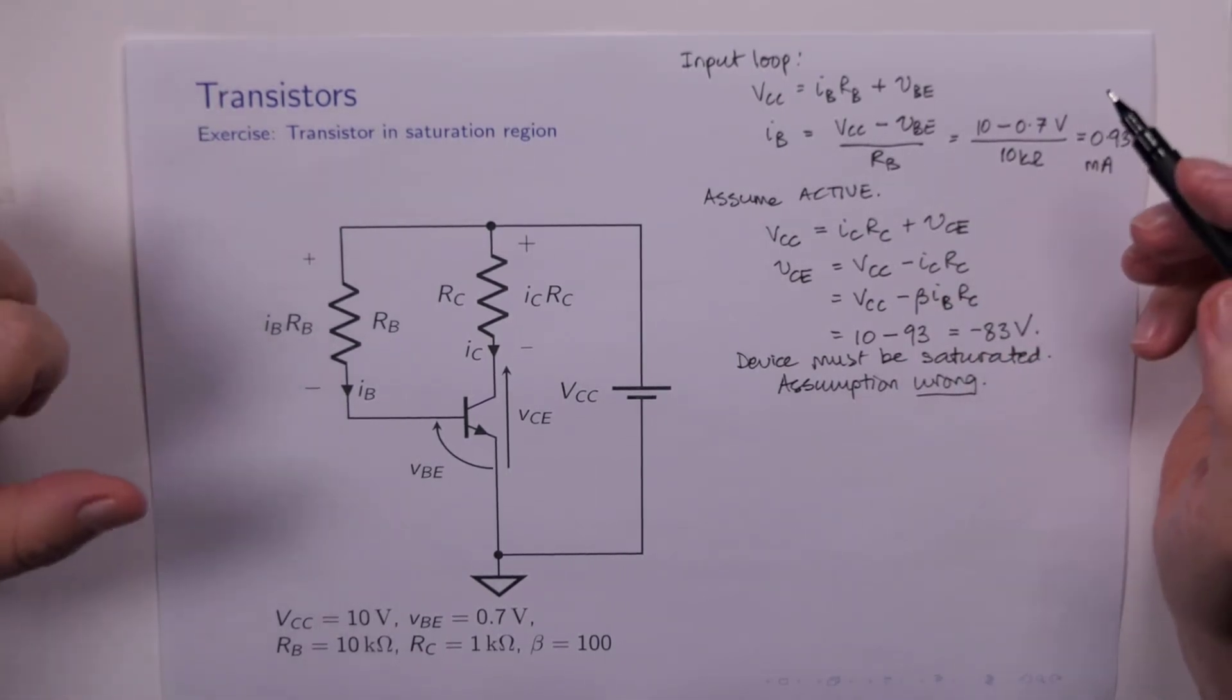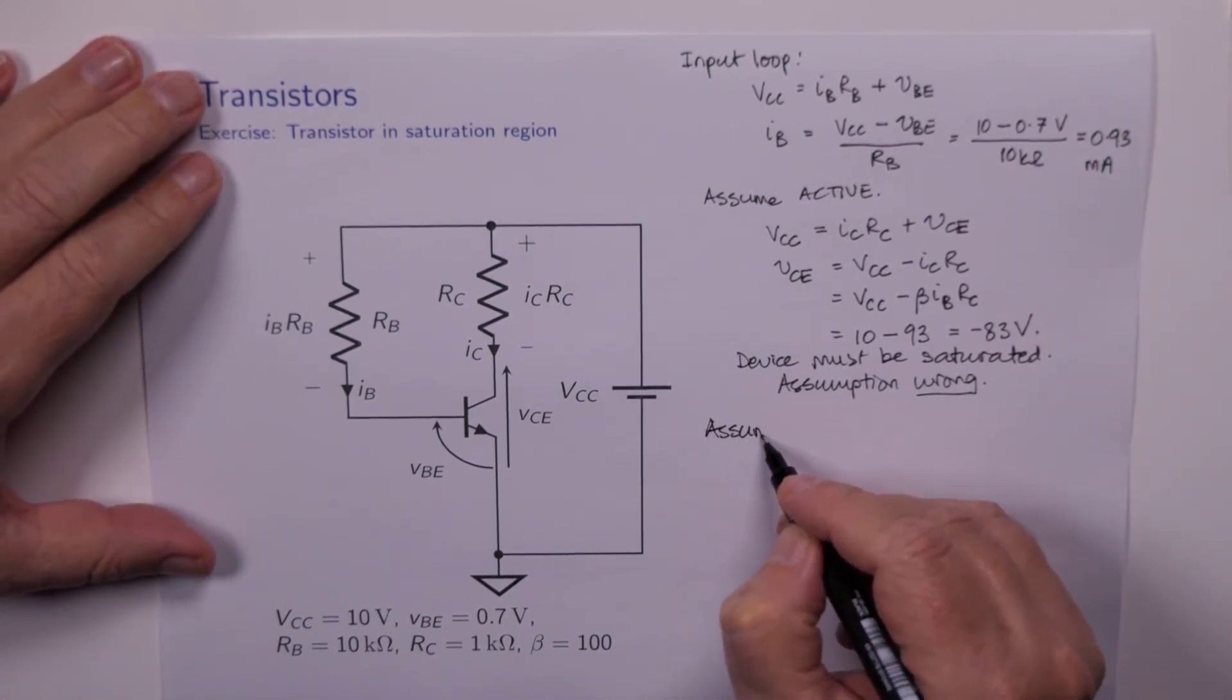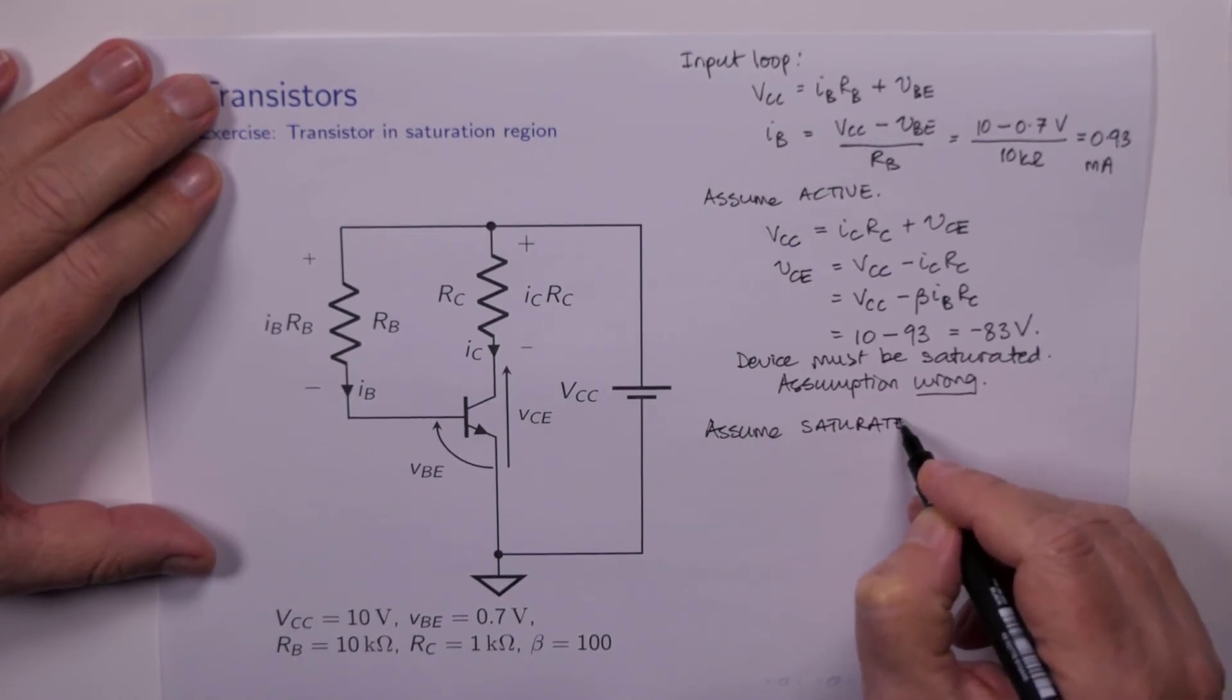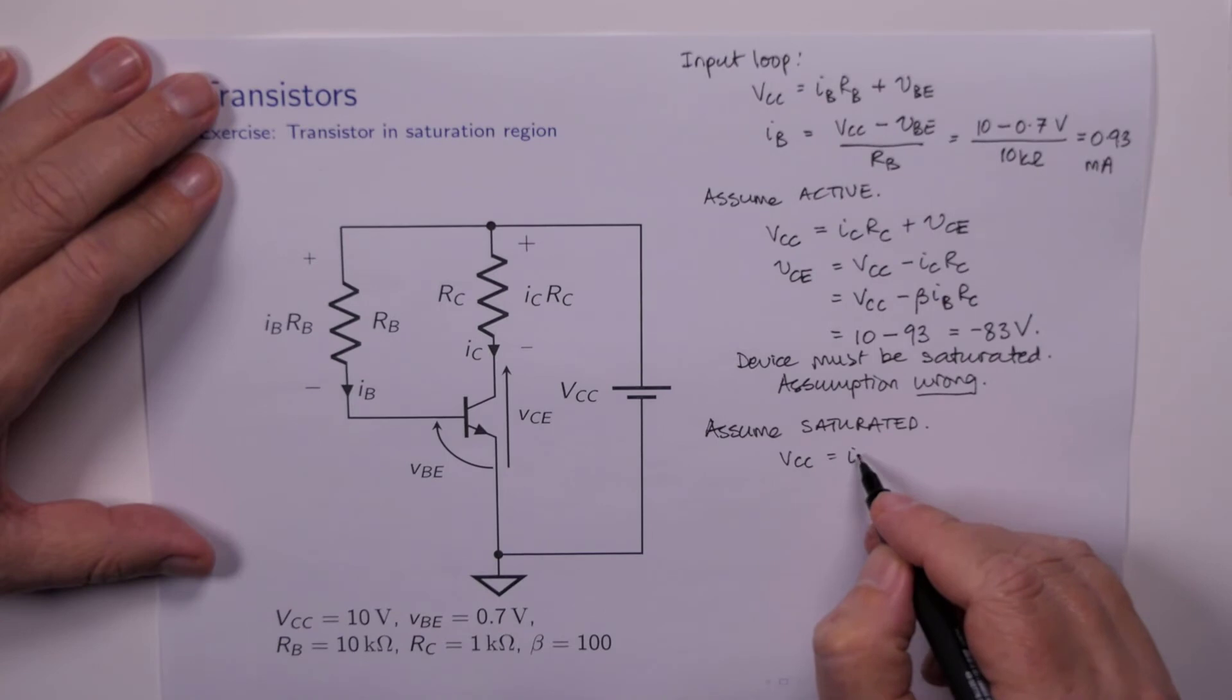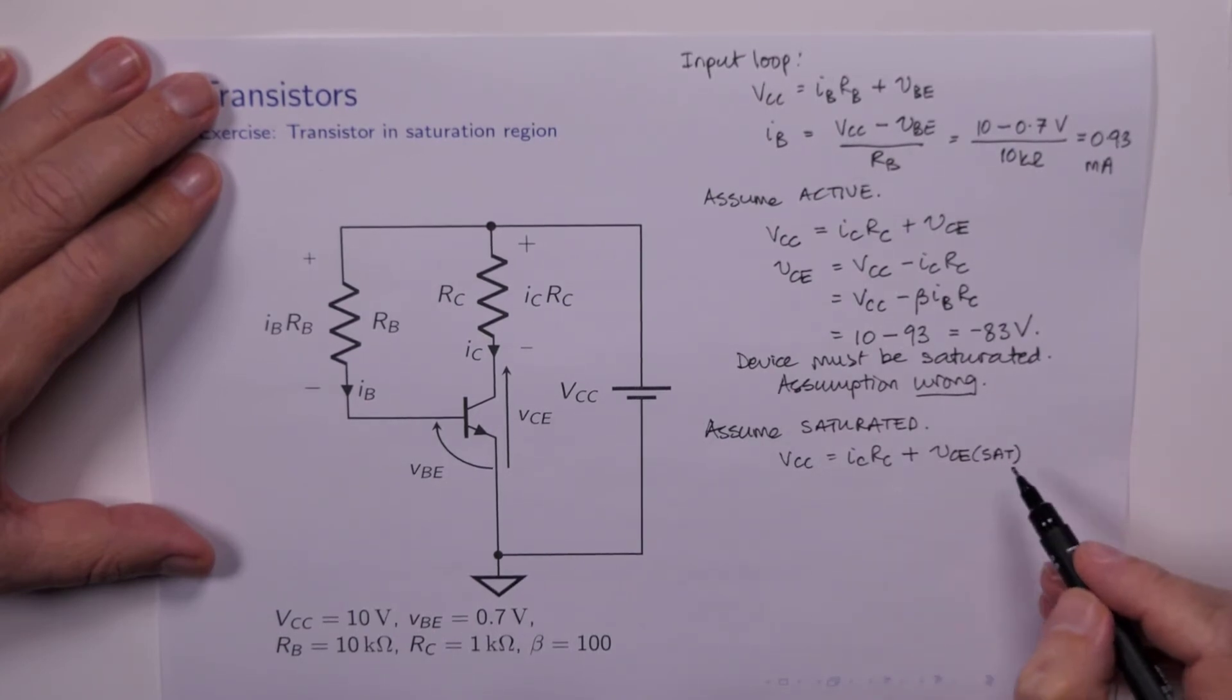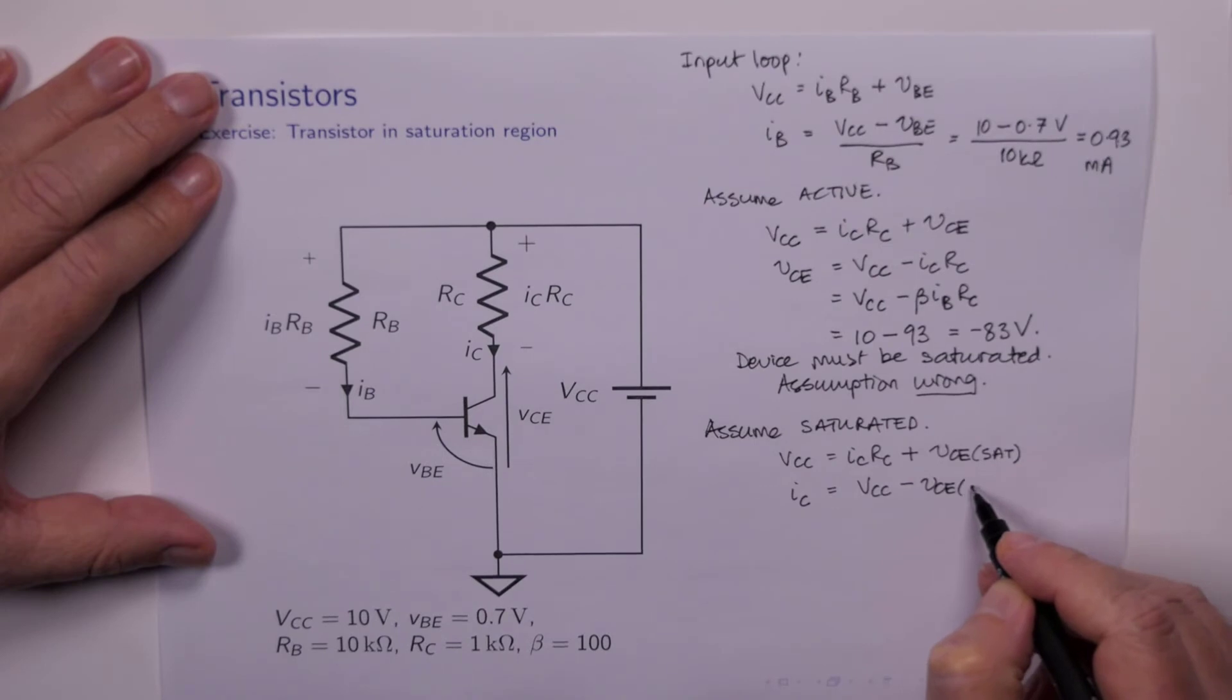OK, so the device is not in the active region. We already deduced that it was not in the cutoff region. So we'll have to now assume that the device is saturated. Well, if it's saturated, then in the output loop here, we've got VCC equals IC RC plus VCE. But now it's VCE sat.